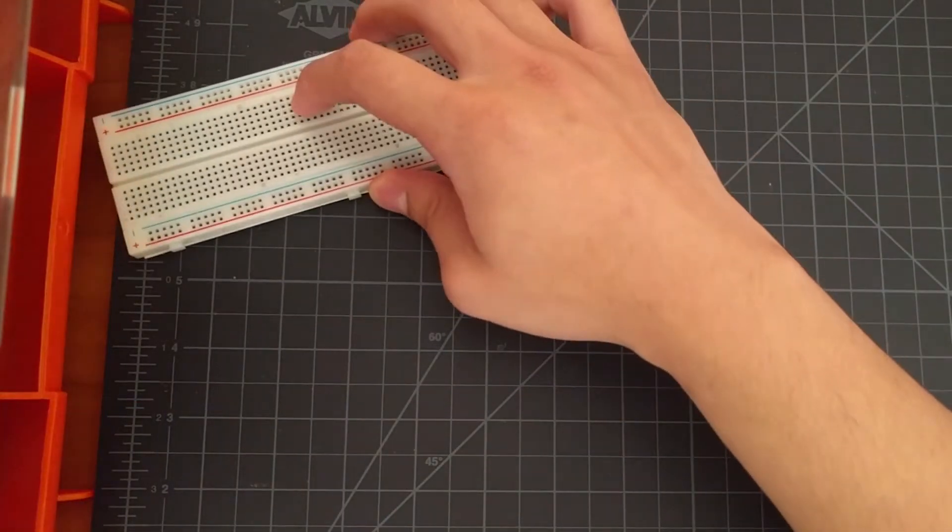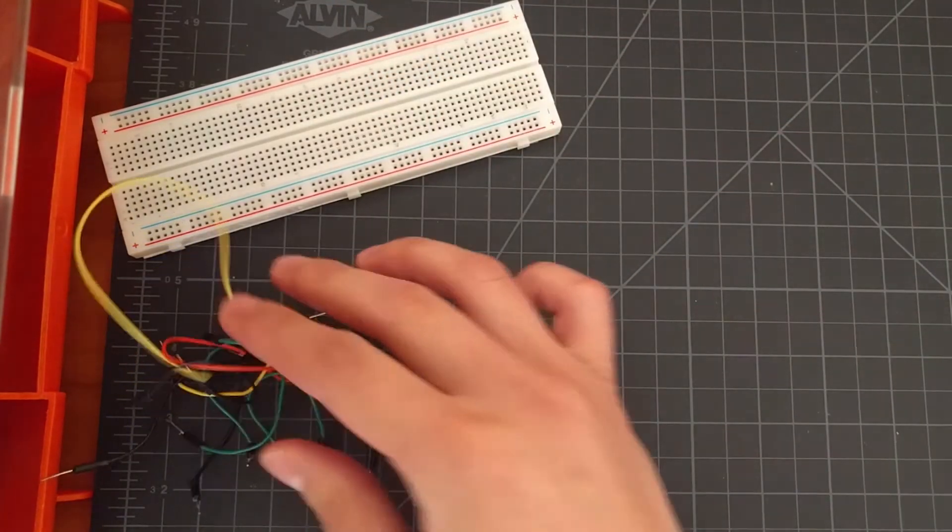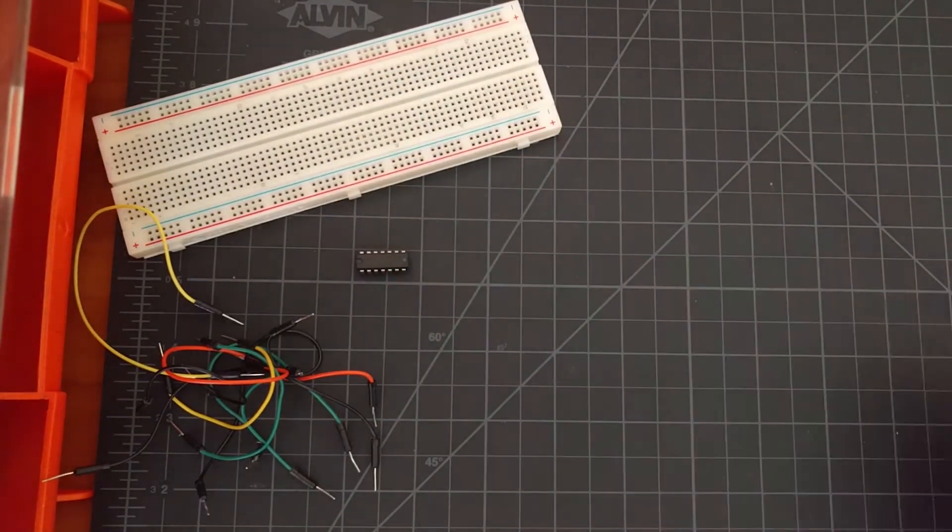Here are the materials that you will need. You will need a breadboard, jumper wires, the 74107 chip,